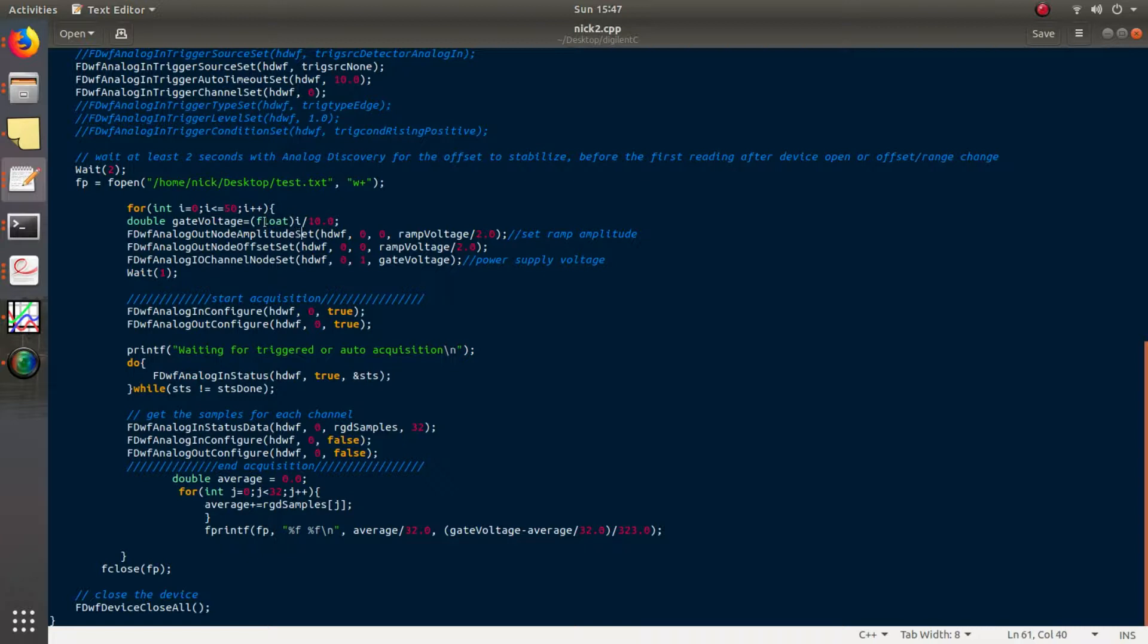As always, you can check out the code on our GitHub to figure out the details of how to program the Analog Discovery 2 with the API, which is what I did in this case. I'm not going to go through the details here, but email me if you have any questions about that in the future.